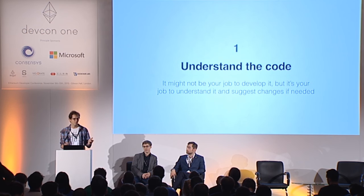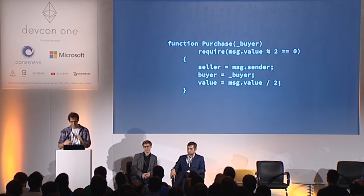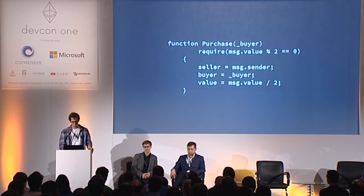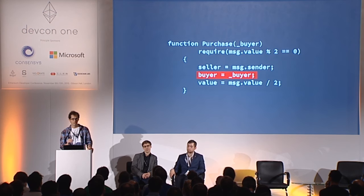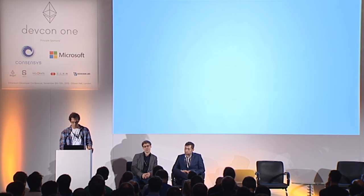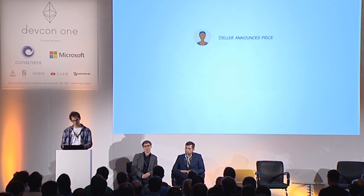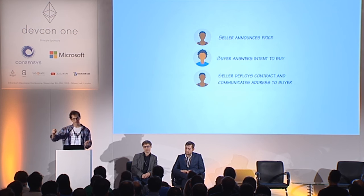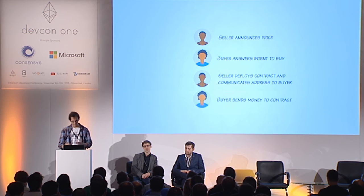To be a good translator, designers need to do something they don't really like — understanding the code and what's going on under the hood. It's not the designer's job to develop, but if he doesn't understand what he's designing, he won't do a good job. Here's an example: the first time Christian came up with this code, the first layout of the purchase function had the buyer set at contract creation.